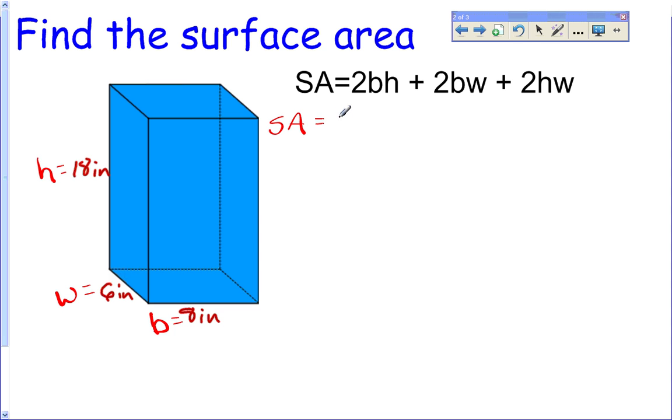Surface area equals 2 times my b, which we said was 8, times my h, which we said was 18, plus 2 times my b, which again is 8, times my w, which is 6, plus 2 times h, which is 18, times w, which is 6. All I did was replace all the b's with 8s, all the h's with 18s, and all the w's with 6s.